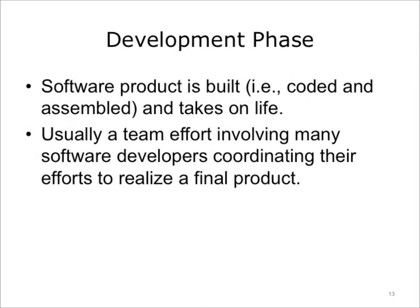The system is built during the development phase. This includes source code files, header files, make files, and binaries. Everything is coded and assembled, and the actual design of the system is realized as living, breathing software. This process is usually a team effort with its own set of sub-goals and milestones, involving many software developers who coordinate their efforts to realize a final product.